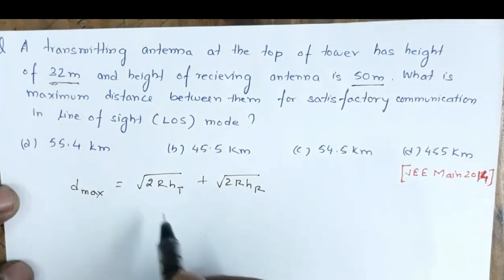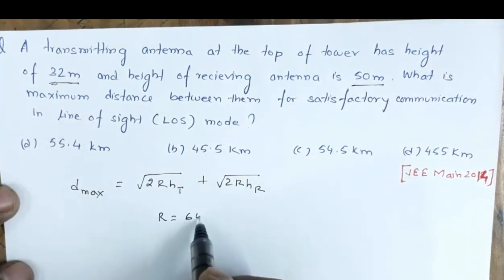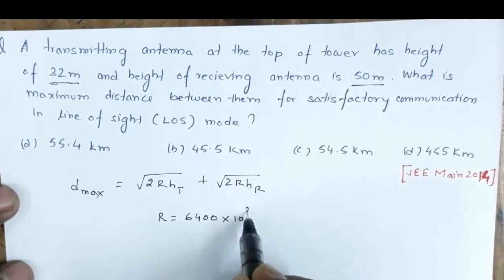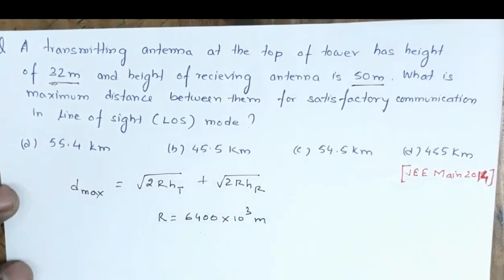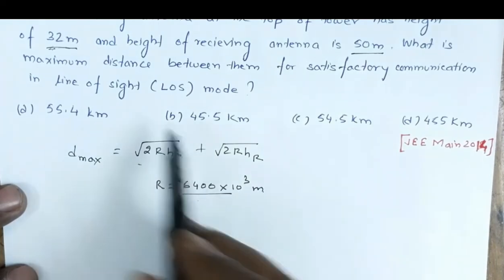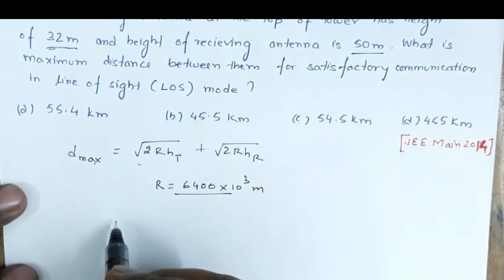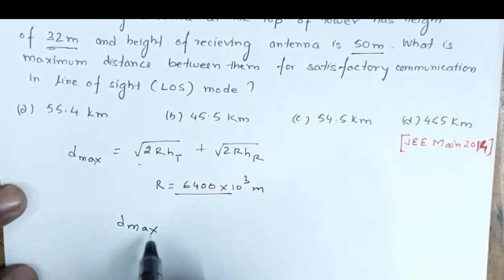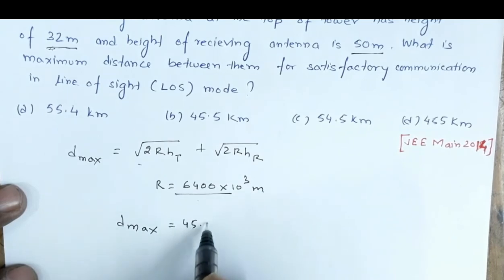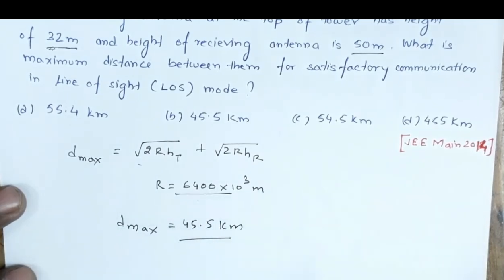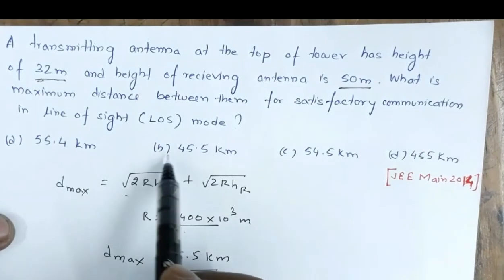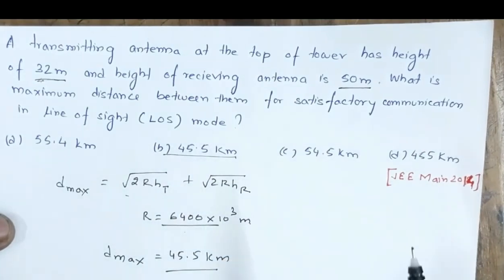The radius of Earth is 6400 km, i.e., 6.4×10⁶ meters. Substituting the given values — transmitting antenna height 32 m and receiving antenna height 50 m — the value of d_max comes to approximately 45.5 kilometers. From the given options, option B is the correct answer.